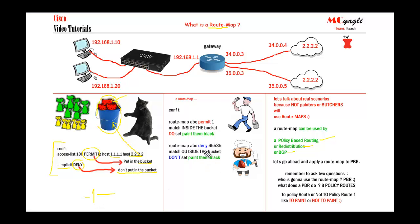Here's an example of a route map. It goes: route-map ABC permit 1 — match inside the bucket — set paint them black. And route-map ABC deny [sequence] — match outside the bucket — don't set paint them black. Every route map has three lines: the first line defines the name, the permit or deny statement, and a sequence number. The second line is the match line, and the third line is the set line — both are always there even if you don't type them.